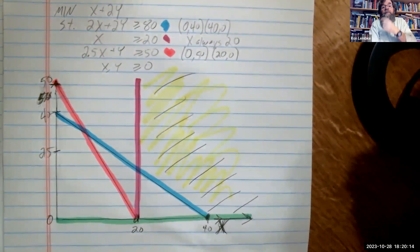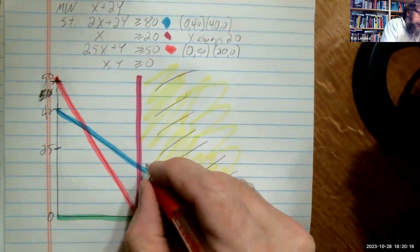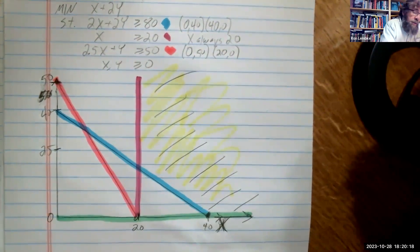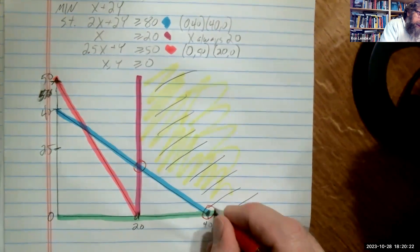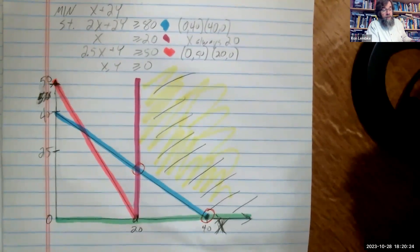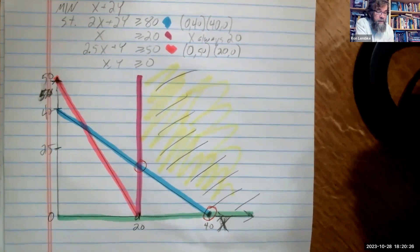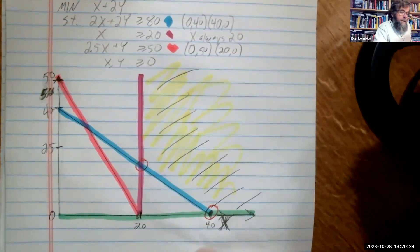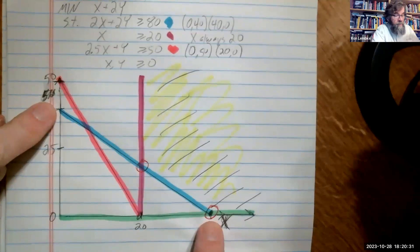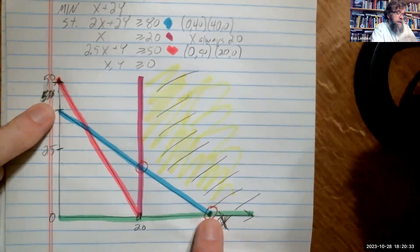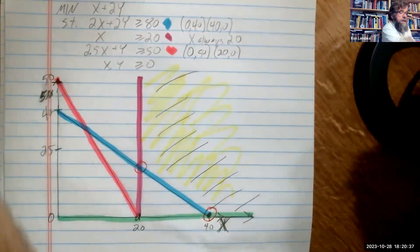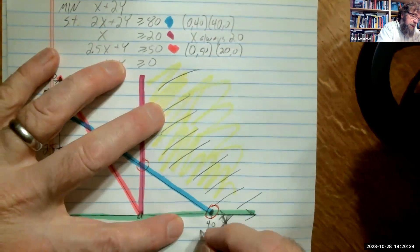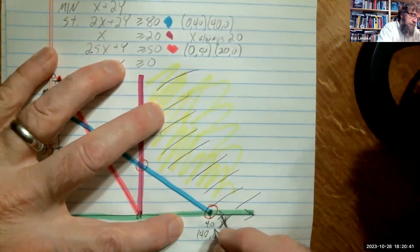And our optimal answer has to be at one of the corner points, and the only corner points on our feasible region are this spot right here and that spot right there. So we need to solve for those. And lucky for us, this is not going to be very hard because this point right here is one of the endpoints of our blue line. And so this is the point where x equals 40 and y equals zero. So that's the point 40, 0.